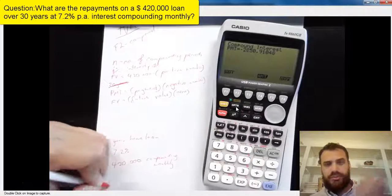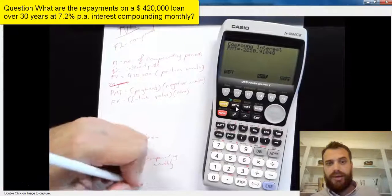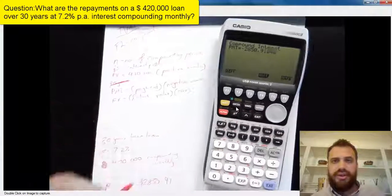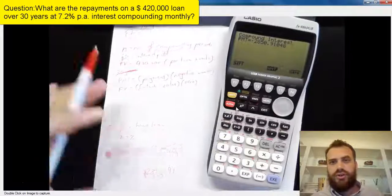Now, we want to find the payment, so we just press that F4 button to find the payment. And that's going to give us an answer of minus $2,850.91.